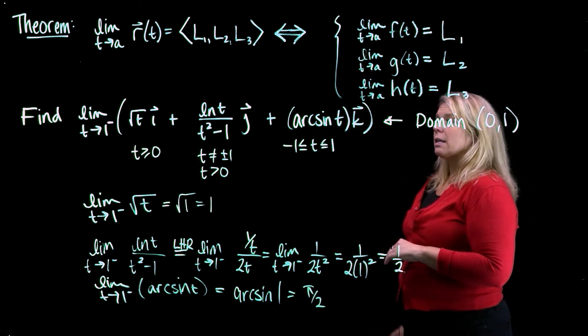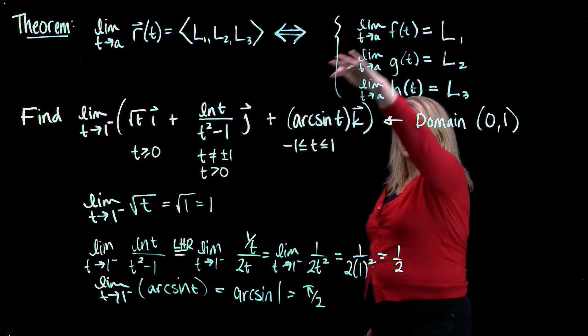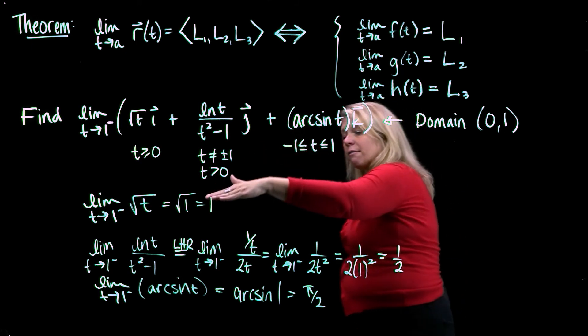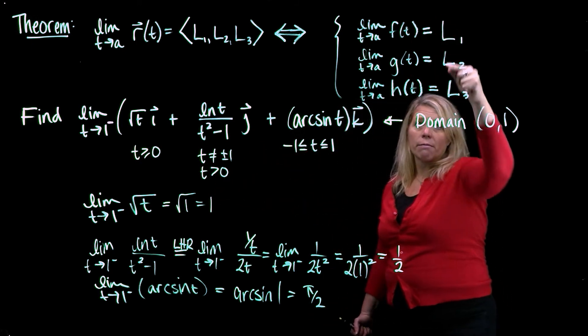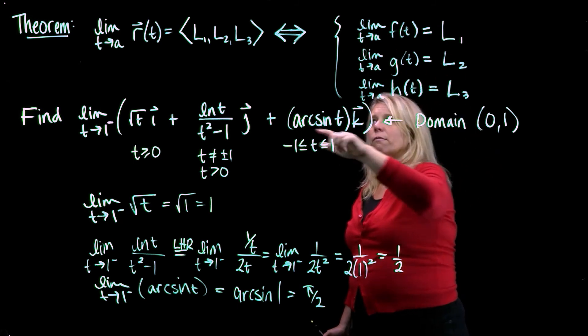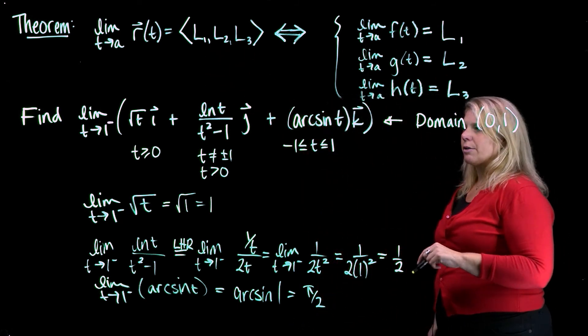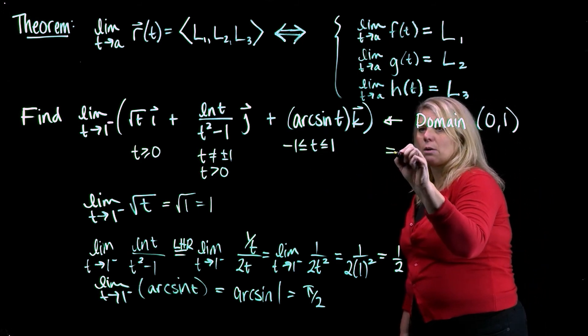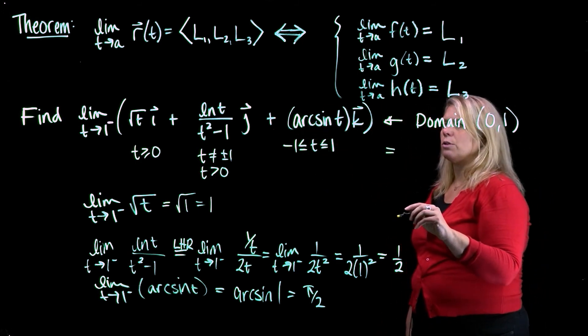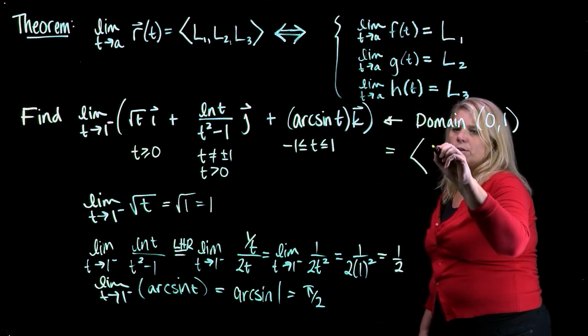So I'm using this theorem. I was interested in this limit of this vector-valued function. This theorem tells me if I can find limits of my three component functions, then the limit of those three component functions gives me the components in my answer here. So the limit that we were interested in at the beginning of the problem equals <1, 1/2, π/2>.